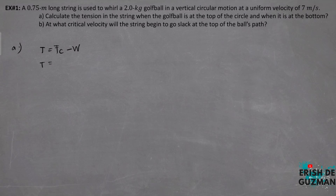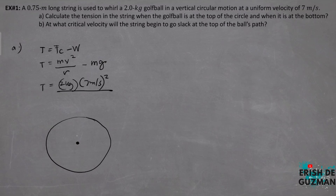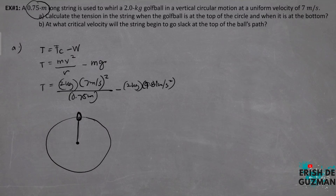Centripetal force equals mass times velocity squared over R, minus weight, which is mass times gravity. Tension equals 2 kg × (7 m/s)² / 0.75 m − 2 kg × 9.81 m/s². The string length of 0.75 meters is the radius of the circular motion. By calculating, the tension in the string at the top of the circular motion is equal to 111.05 N.